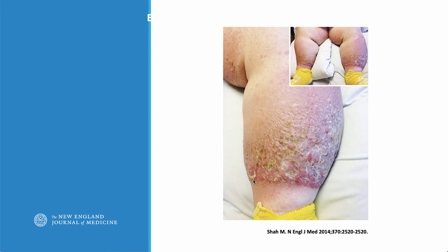As venous insufficiency worsens, the skin takes on certain characteristics. We see dark pigmentation, and the skin really suffers as well — you get scaling. It's typically not all the way down to the ankle; it's usually in the higher pressure areas of the leg.